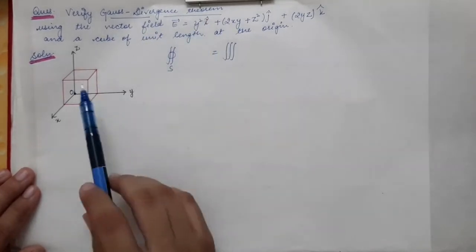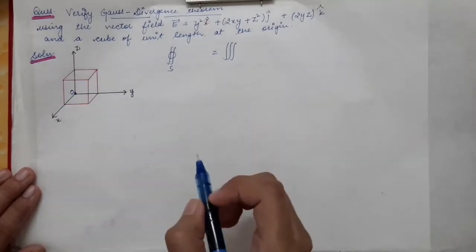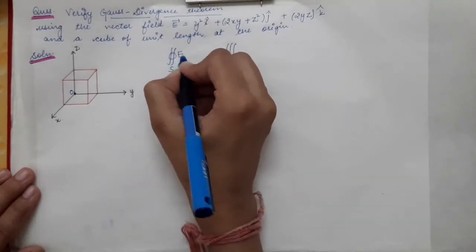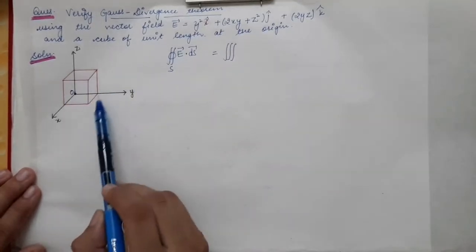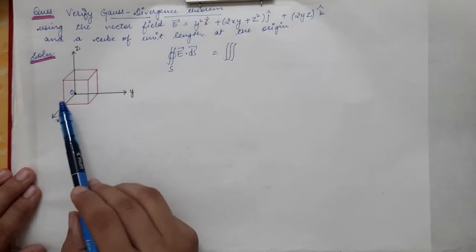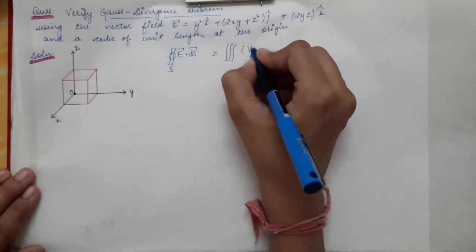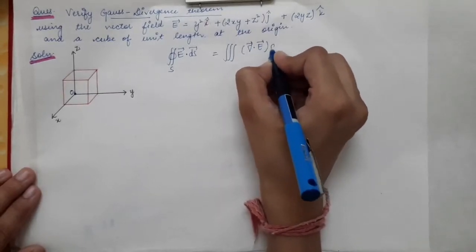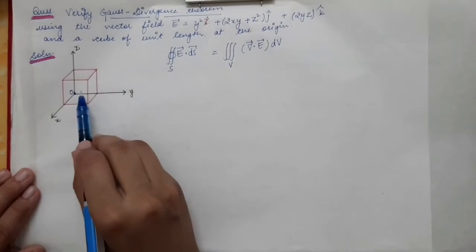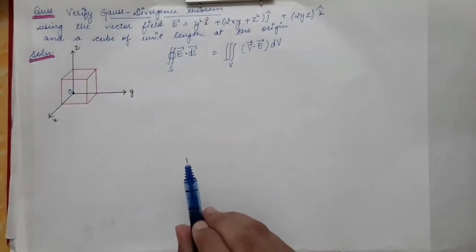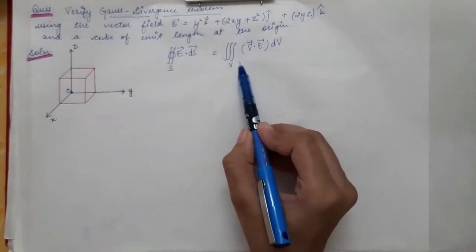We have to verify the Gauss Divergence Theorem. The theorem states that the surface integral of E over the closed surface equals the volume integral of the divergence of E over the enclosed volume. We will first evaluate the right-hand side, which is the volume integral.